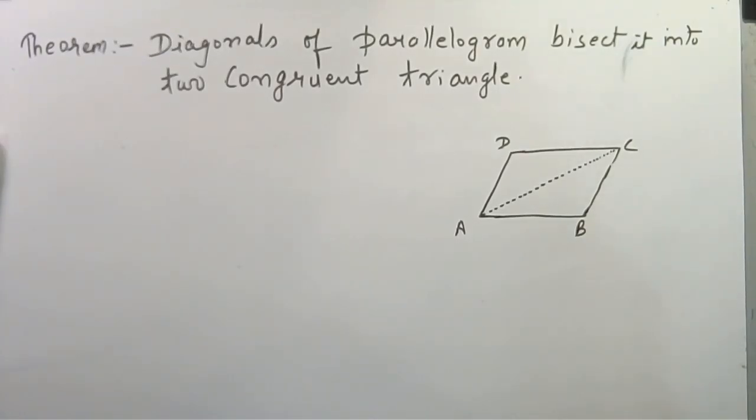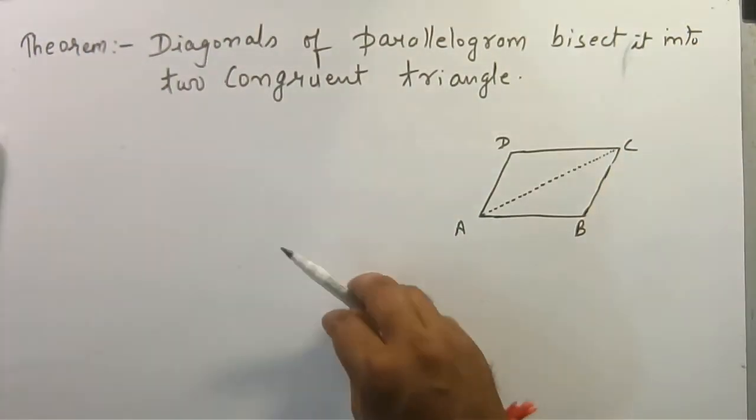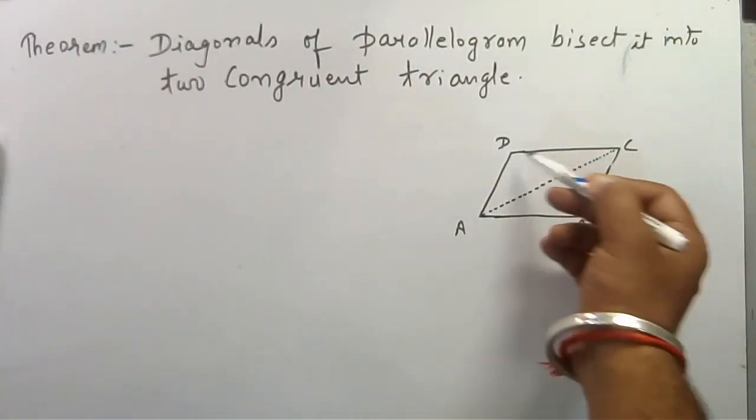Hello friends, my name is Kamal and in this video we are going to prove a small theorem of parallelogram. The theorem is that the diagonal of the parallelogram bisects it into two congruent triangles. Suppose ABCD is